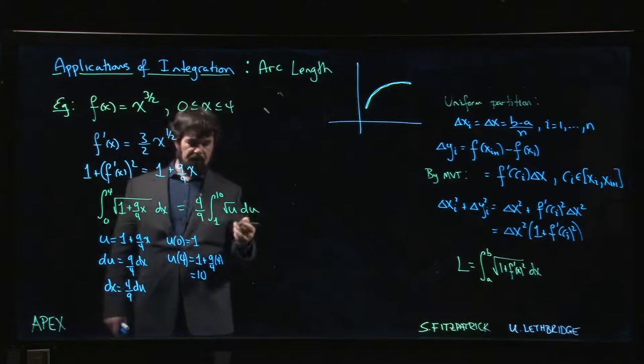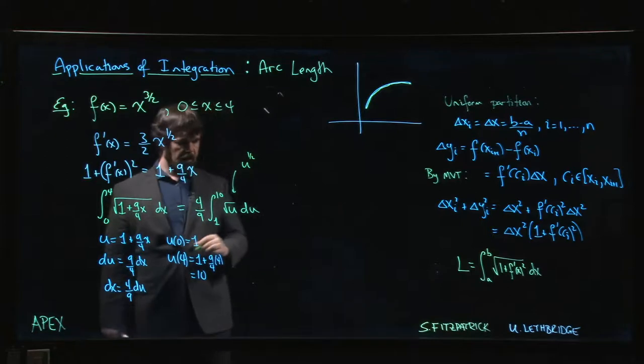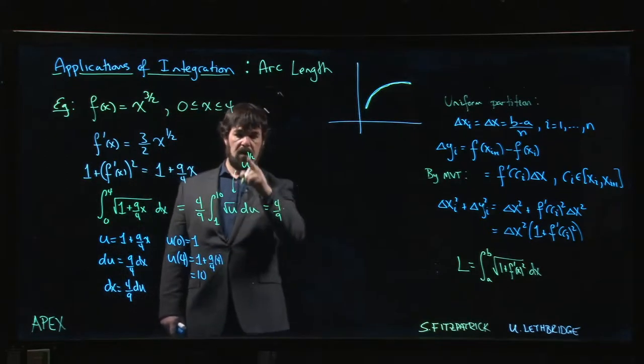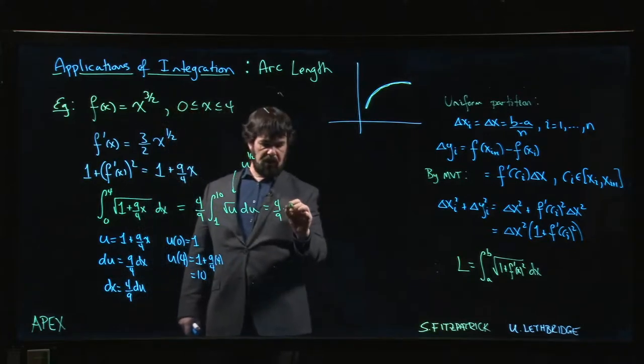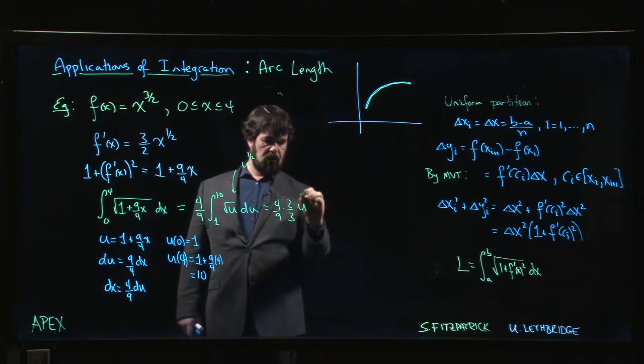Well that's simple enough. Keeping in mind that square root of u is u to the 1 over 2, power rule says add 1 to the exponent, we get 3 halves. Divide by the new exponent, so dividing by 3 halves is multiplying by 2 thirds. 2 thirds u to the 3 over 2, and we're evaluating from 1 to 10.